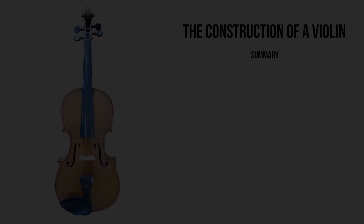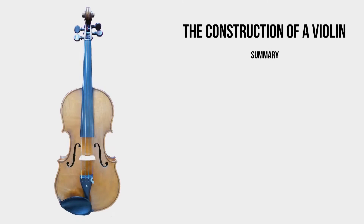Here I would like to summarize what I have explained to you before. The violin is like a body — it has a head. The head contains the scroll, and there is a peg box including the tuning pegs. And here is the neck and the fingerboard.